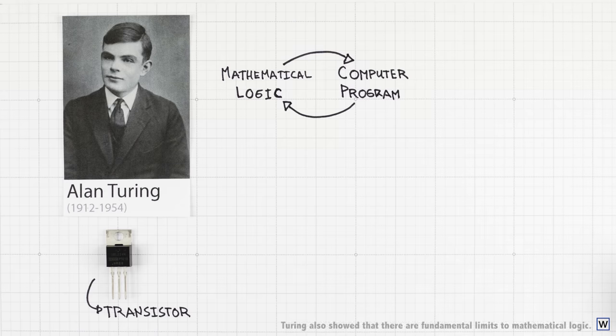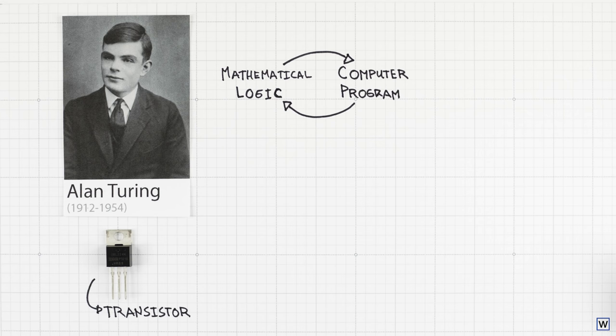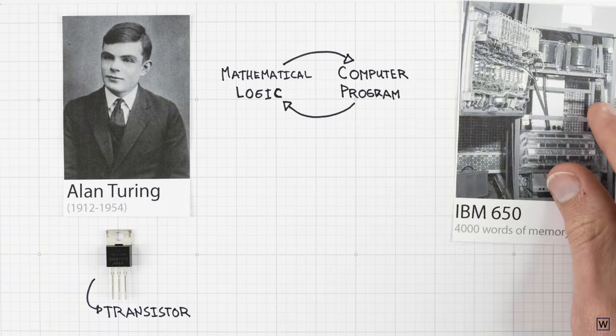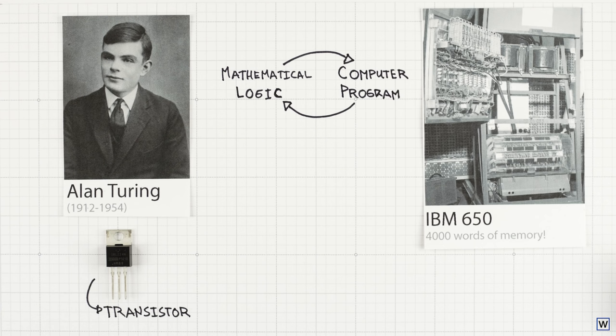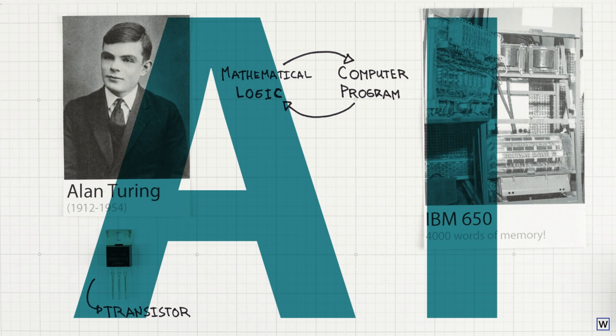If rational thought could be made into a logical system, it could be programmed, and the computer would, in a very real sense, think. These breakthroughs, alongside rapid advances in computing technology, led to the creation of a brand new discipline in the 1950s, artificial intelligence.